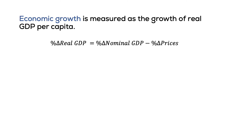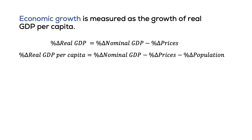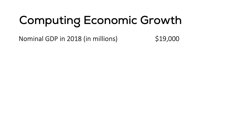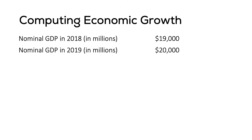For economic growth, we are interested in the growth rate of real GDP per capita, so we also need to subtract the growth rate of population. Here we have an example of an economy that had a nominal GDP of 19 trillion dollars in 2018, which grew to 20 trillion dollars in 2019.